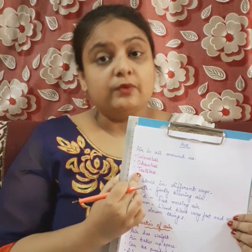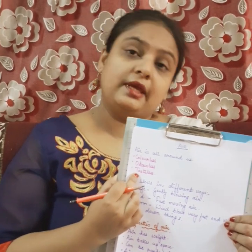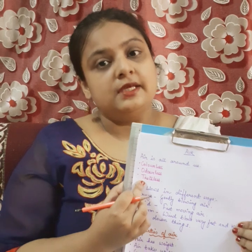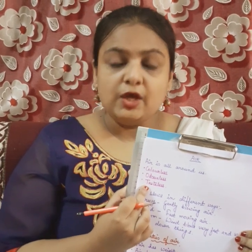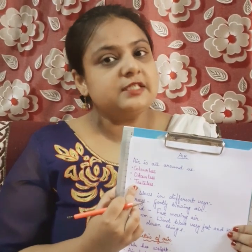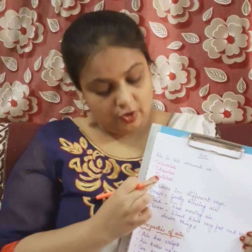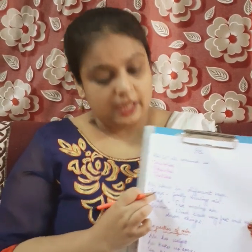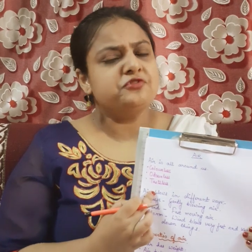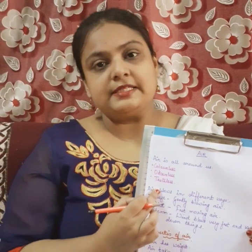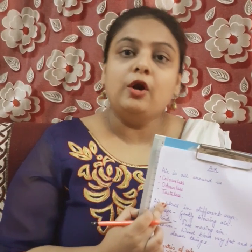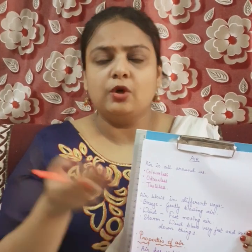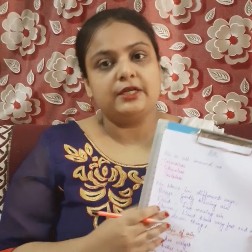The first one is wind. The air which blows very soft and gently, we call it wind. Next, when the air blows a little faster than the wind, we call it breeze. And the third one is storm — when the air blows very, very fast and it breaks down or knocks down different things like trees, buildings, or lampposts, that is known as storm.